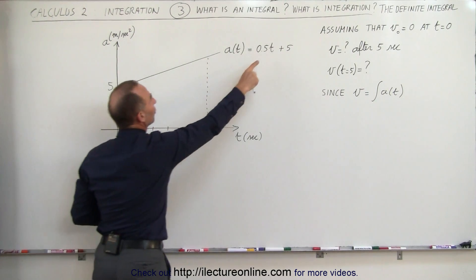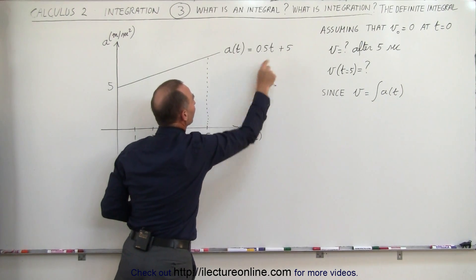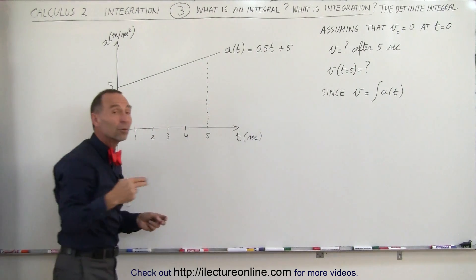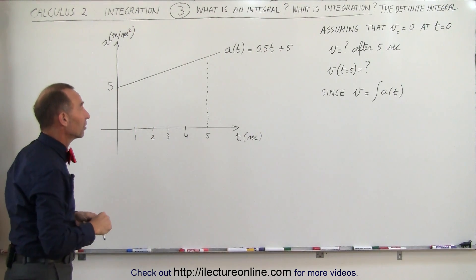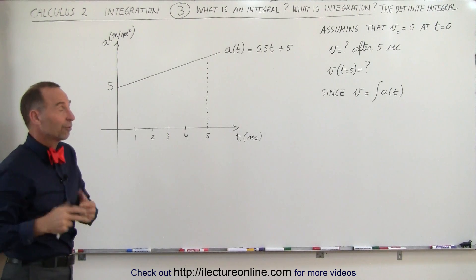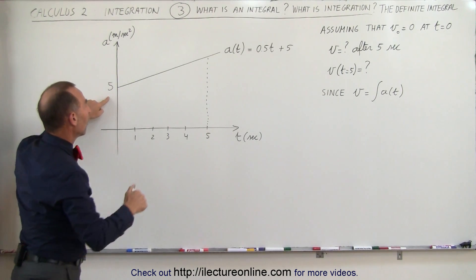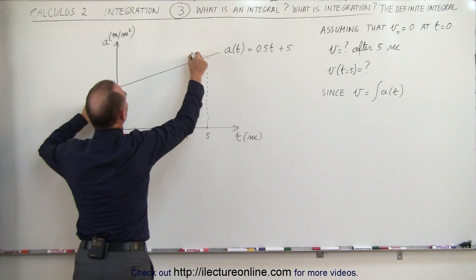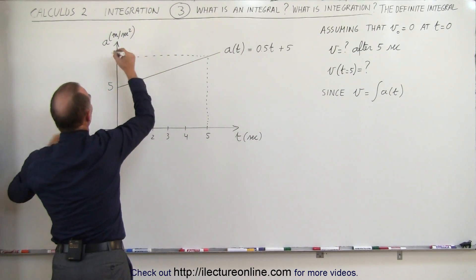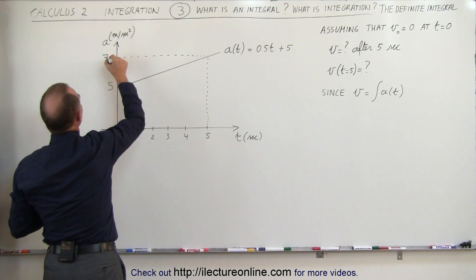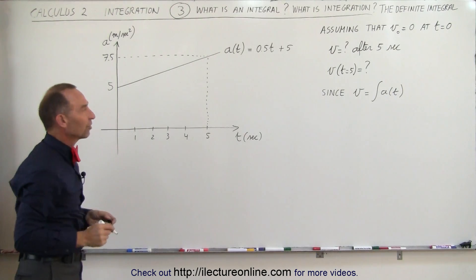So it starts out, when time is equal to zero, the acceleration is 5 meters per second, and for each second it increases by 0.5 meters per second. And I should say per second squared, of course, because that's acceleration per second squared. So after 5 seconds, let's say this could be a car, would then be accelerating at 7.5 meters per second squared.